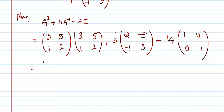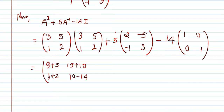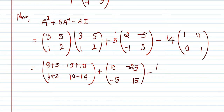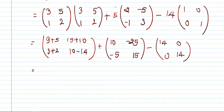First do the matrix multiplication. A squared gives [[9+5, 15+10], [3+2, 5+4]] = [[14, 25], [5, 9]]. Then 5 times A inverse gives [[10, -25], [-5, 15]]. Then 14I gives [[14, 0], [0, 14]].